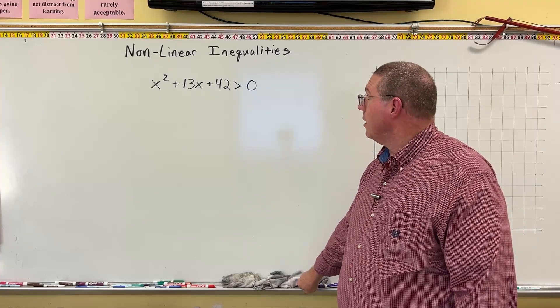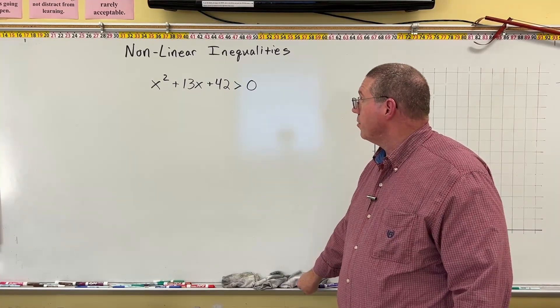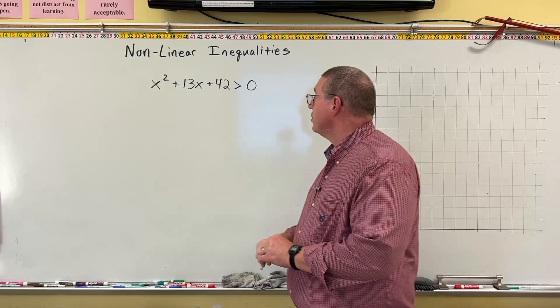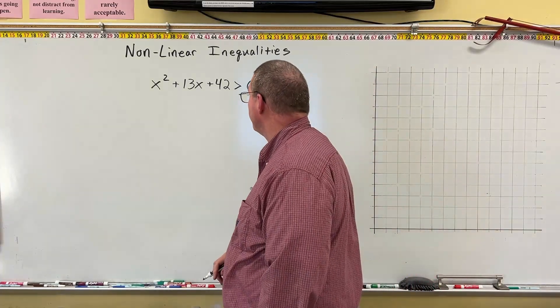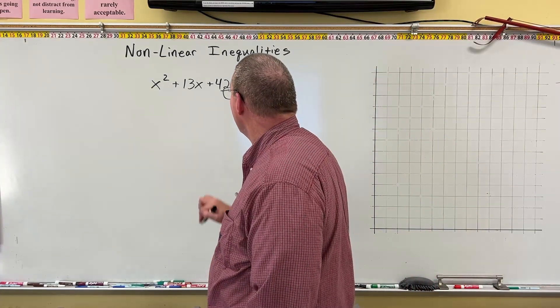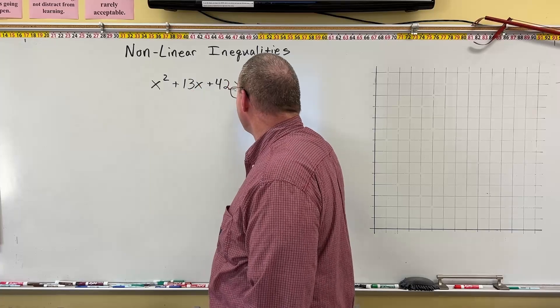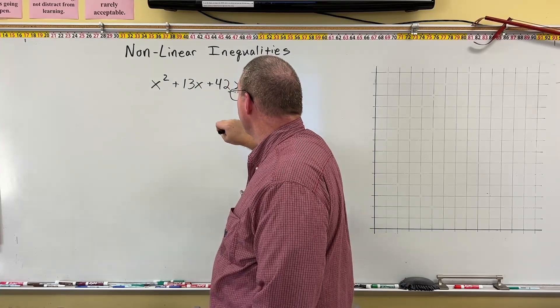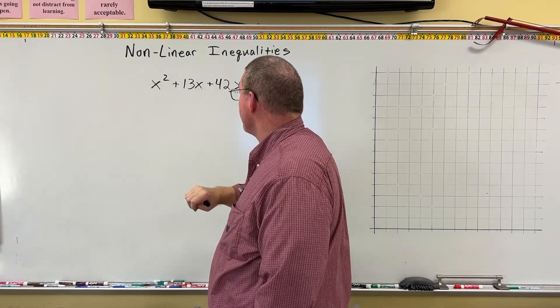So here is a quadratic inequality, and we want to solve this. The first thing I'm going to do is factor this side. We can see it's already set equal to zero. The one side is already equal to zero, and so now I'm going to factor this side.